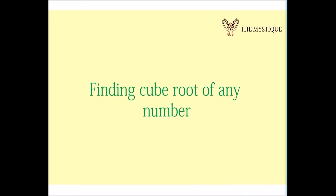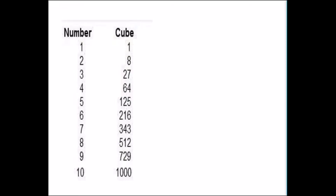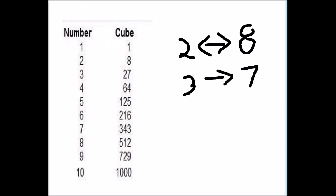For this you need to know the cubes from 1 to 10. The cube of 1 is 1, meaning any number ending with 1 will have its cube ending with 1. For 2 it is 8, for 3 it is 7, for 4 it is 4, for 5 it is 5, for 6 it is 6, for 7 it is 3, for 8 it is 2, for 9 it is 9, for 0 it is 0. So for 2 it is 8 and for 8 it is 2; for 3 it is 7 and for 7 it is 3. For all other numbers the cubes will have their units digits as the same number.